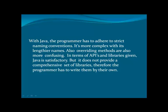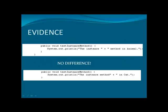Let us observe the writability factor with Java. With Java, the program has to adhere to strict naming conventions. It's most complex with its lengthier names. Also, overriding methods are more confusing. In terms of application programmer interfaces and libraries, Java is satisfactory, but it does not provide a comprehensive set of libraries, therefore the programmer has to write them on their own. In this evidence set, we can see how the writability of Java is proven.